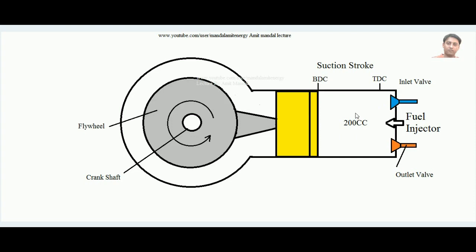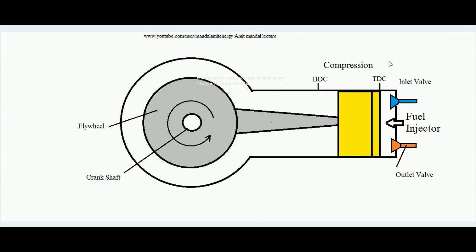This is how the suction stroke ends. Suppose it sucks 200 cc of air inside. Next is the compression stroke in which that air is compressed. At the end of compression, some amount of diesel is sprayed inside by the help of this fuel injector. The diesel goes inside, it catches fire, and by this way heat is added to the system.